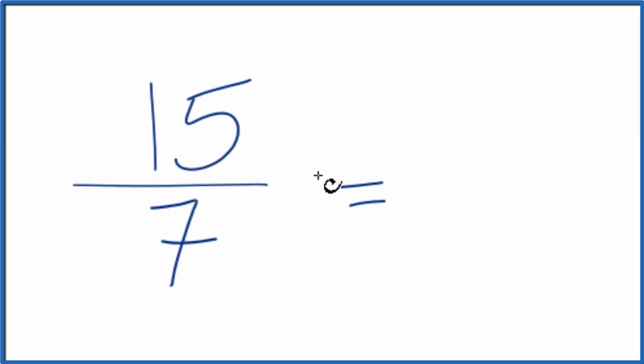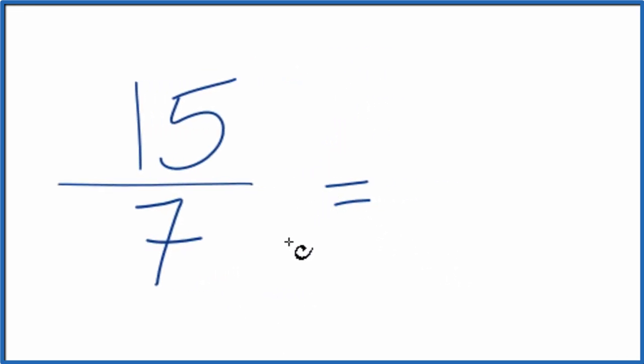But when I look at 15 and 7, the only thing that goes into both 15 and 7 is 1. So 15 divided by 1, that's 15. 7 divided by 1, that's 7. And that's what we started with.